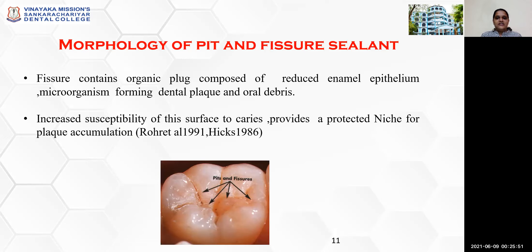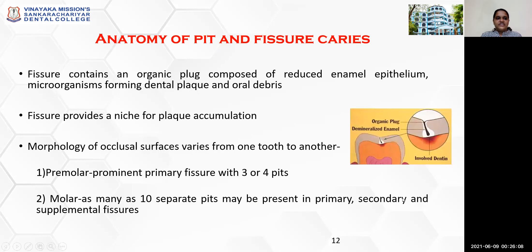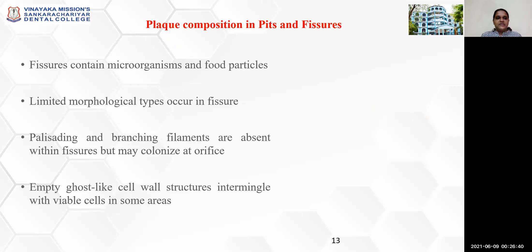Increased susceptibility of this surface to caries provides a productive niche for plaque accumulation. The morphology of occlusal surfaces varies from one tooth to another. Premolars contain primary fissures with 3 or 4 pits. In molars, as many as 10 separate pits may be present in primary, secondary, and supplemental fissures.